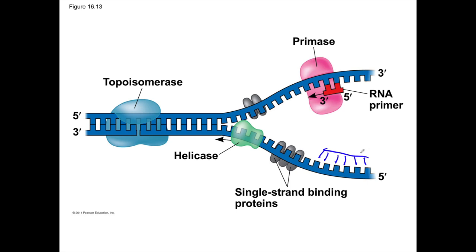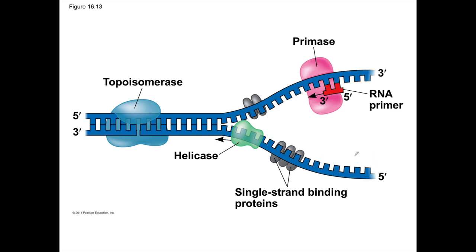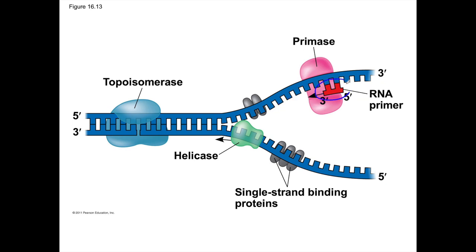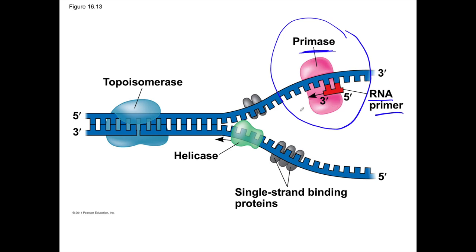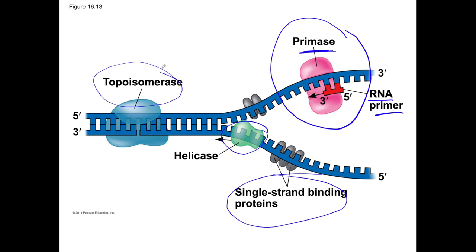Now we want to build new DNA on this old single-stranded DNA. But there's a problem: the enzyme that builds new DNA cannot start on single-stranded DNA alone. Before that can happen, you need a little piece of RNA placed on your DNA, called a primer. Once that RNA primer is there, then the enzyme can go along and build new DNA on the old DNA — but it cannot do it without the primer first. The enzyme that places the RNA primer is called primase.